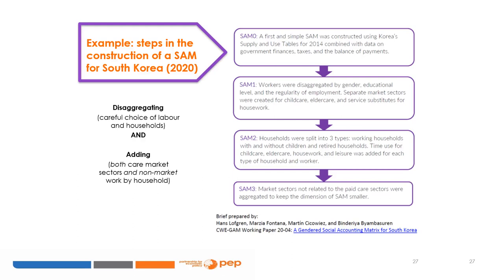In SAM 2, households were split into three types: working households with children, working households without children, and households of retired people only. Time used for childcare, elder care, housework, and leisure was added for each type of household and worker. Market sectors not related to paid care sectors were aggregated to keep the SAM smaller and the modeling exercise more tractable. The Korea SAM is an example of what can be achieved when good quality gender statistics are available; in cases where data availability is limited, researchers may need a more simplified SAM structure without losing sight of core gender characteristics.